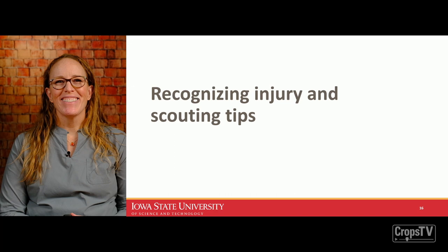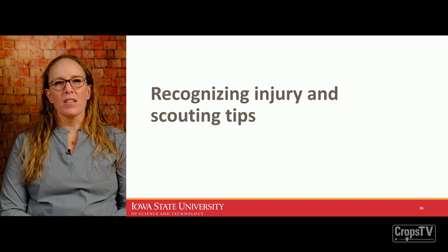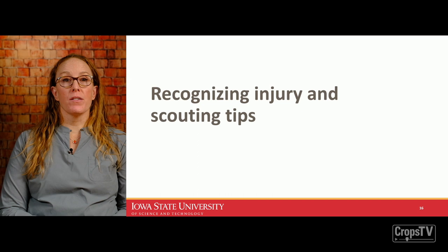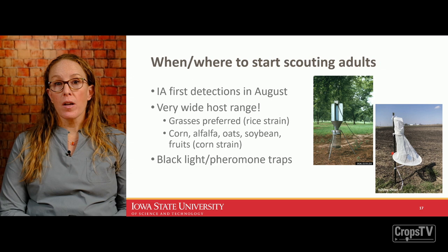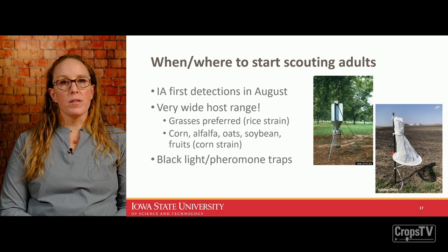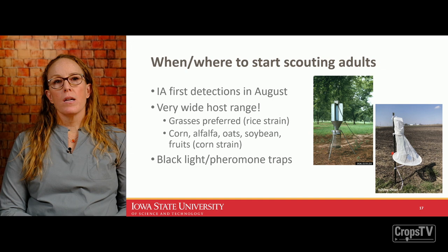With that foundation of biology and life cycle, let me provide tips for recognizing injury and more effective scouting. Our first detections in Iowa are usually in August, but depending on how many storms come up from the south, we could have additional migration events in September as well. They have a very wide host range, and there are two genetic strains: a rice strain that prefers grasses, and a corn strain that feeds on essentially everything else.